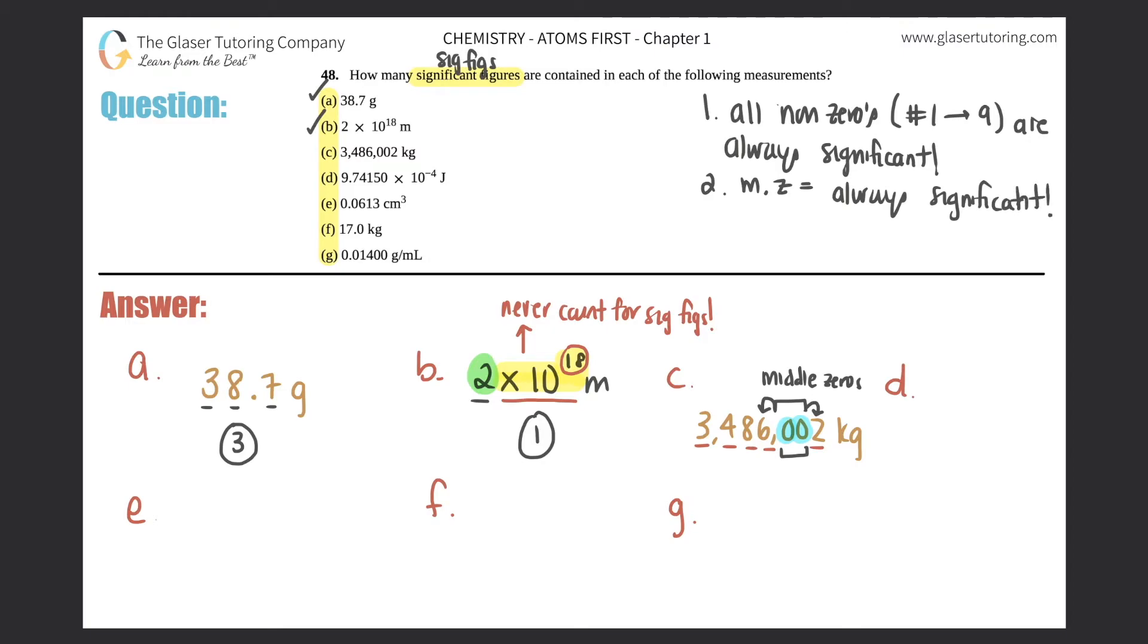Anytime you have zeros caught in between two non-zeros—aka one through nine—they will count as well. So this zero counts and so does this. How many sig figs in total? One, two, three, four, five, six, and seven. So this one has seven sig figs.